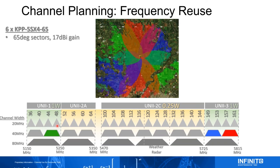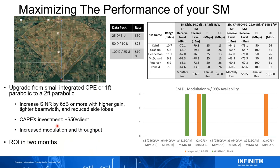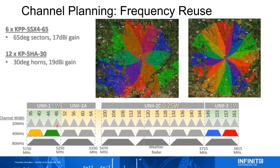A six-sector example uses channel reuse 3 with 40 MHz channels. A 12-horn scenario uses four channels with 40 MHz channels, covering all of UNII-1 and UNII-3 — or UNII-1 and UNII-2 depending on your configuration.